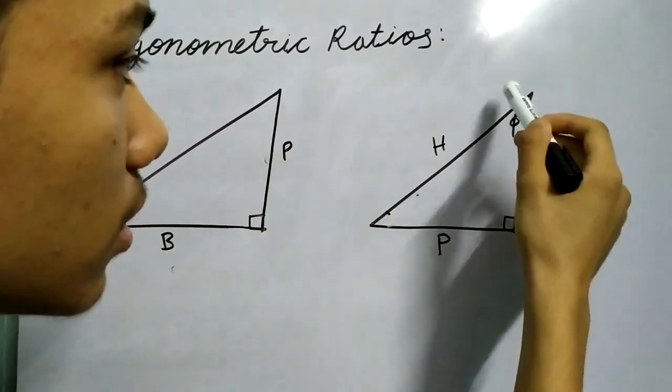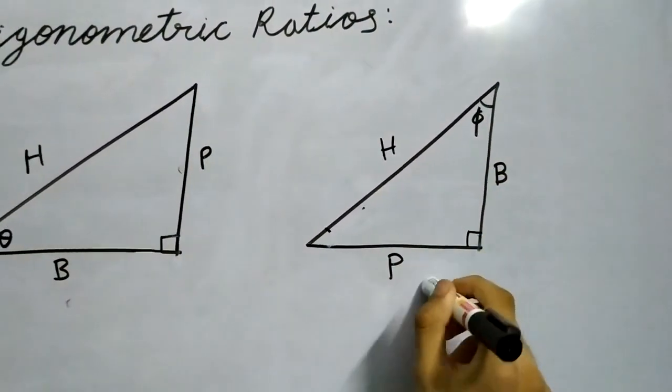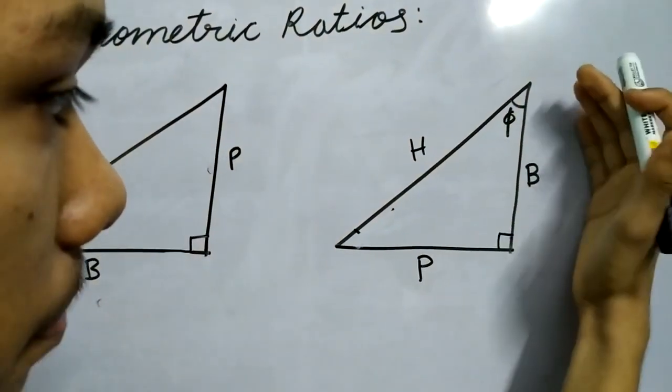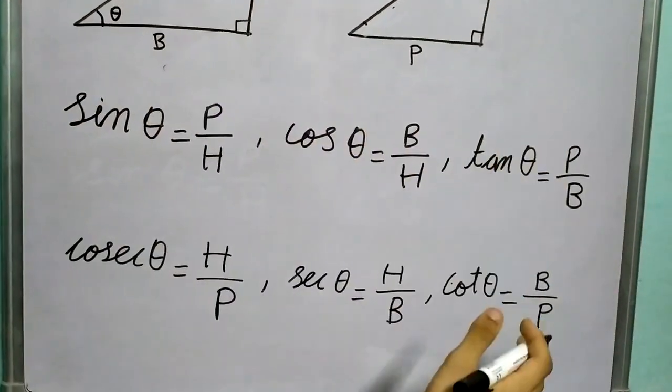And in the same triangle, if I talk about this angle, say φ, this side will become perpendicular and this side will become base. So they will interchange and then we defined these trigonometric ratios.